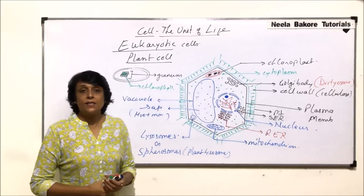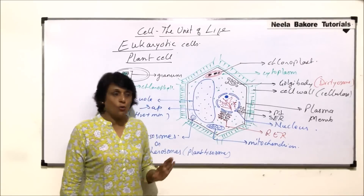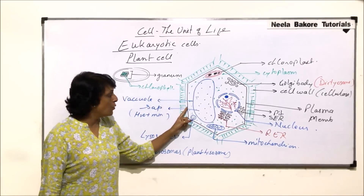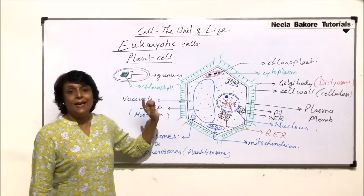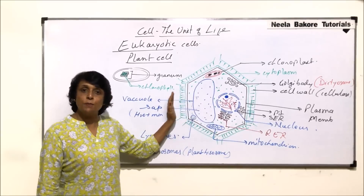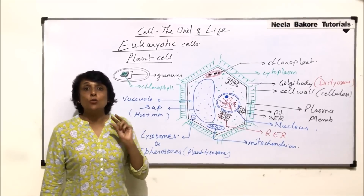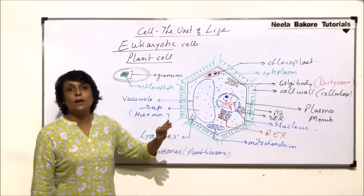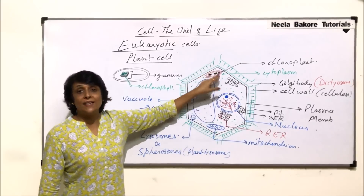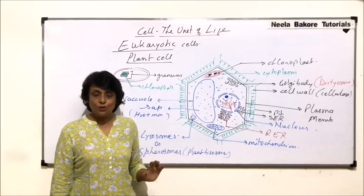In this plant cell, we have not drawn the centrosome or centriole. The differences are: in the animal cell there is only a plasma membrane with no cell wall, whereas in the plant cell there is a cell wall outside the plasma membrane. In the animal cell there is a centrosome with centriole; in the plant cell there is no centrosome and no centriole. In the plant cell there are plastids or chloroplasts, which are absent in the animal cell.